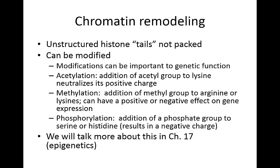The histone tails are not packed — they're typically unstructured. These tails are regions of the histones that are not tucked in within the rest of the protein. These tails can be modified, and these modifications are incredibly important to genetic function. We'll talk more about this in chapter 17, where we talk about epigenetics. Some important modifications: first, acetylation — this is the addition of an acetyl group to lysine, which neutralizes lysine's positive charge. In methylation, you have the addition of a methyl group to arginine or lysine, and this can have either a positive or negative effect on gene expression depending on where it is and how it's acting. Lastly, phosphorylation is the addition of a phosphate group to serine or histidine, which results in a negative charge for that particular region.